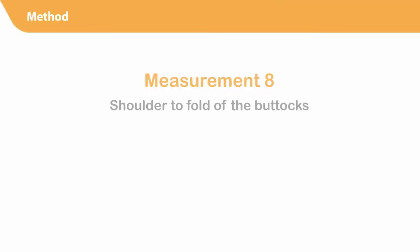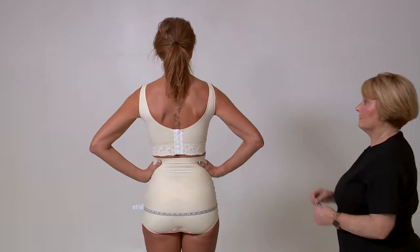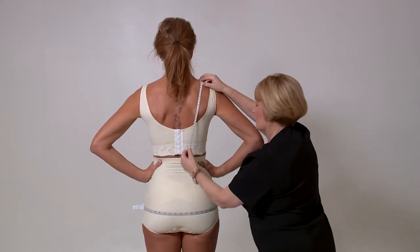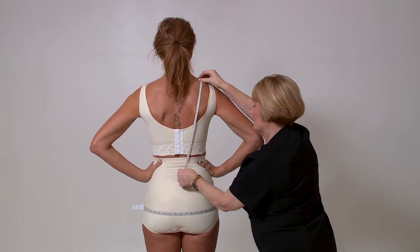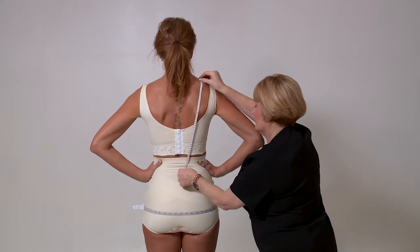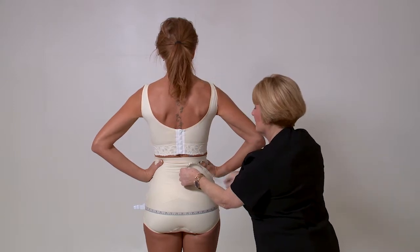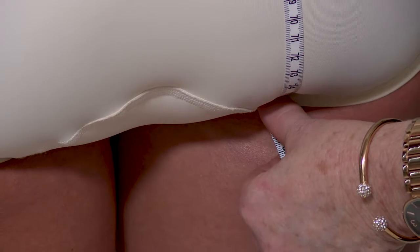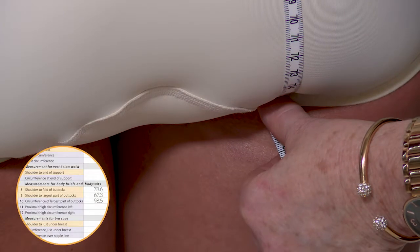Linear measurement number eight: shoulder to fold of the buttocks. This is a contour measurement. Start at the top of center shoulder and measure down to the midsection of the body as demonstrated, taking care to follow the contour of the body, and continue down to the gluteal fold of the buttocks. Lift the buttocks if necessary and tuck the tape high into the fold as shown.